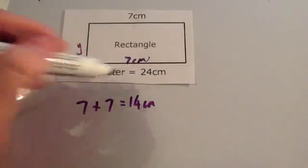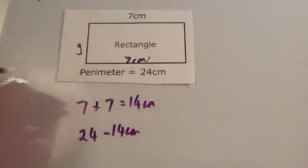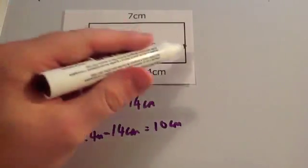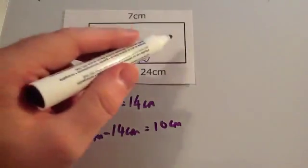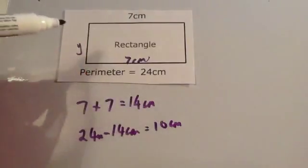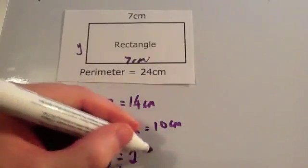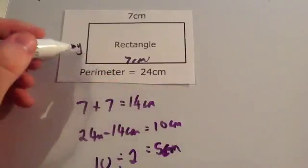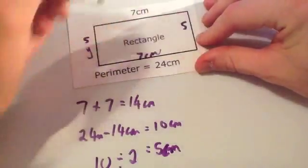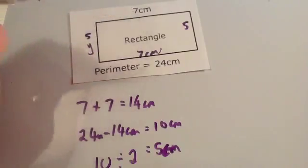The whole shape is twenty-four centimetres, so let's take the fourteen centimetres away from twenty-four centimetres. Twenty-four minus fourteen is ten centimetres. So these two remaining sides altogether are ten centimetres. But they're the same as each other, so if you halve the ten centimetres, it tells you the size of y. Ten divided by two equals five centimetres. Let's check: five plus five is ten, plus seven is seventeen, plus seven is twenty-four. So our answer is correct — y is five centimetres.